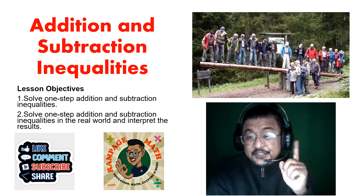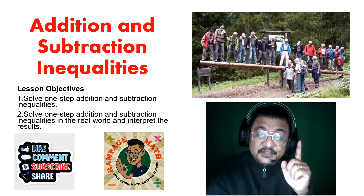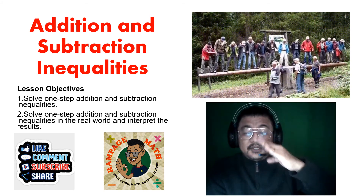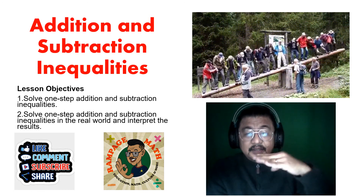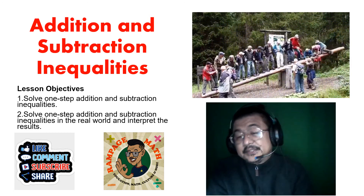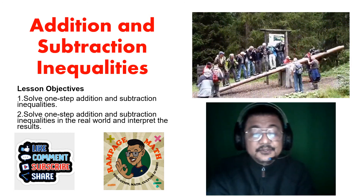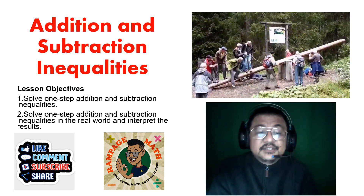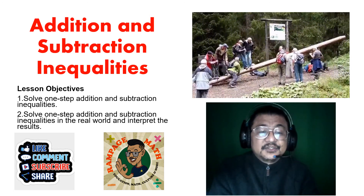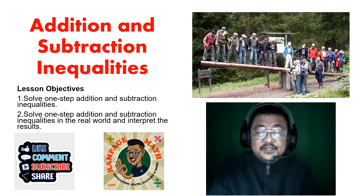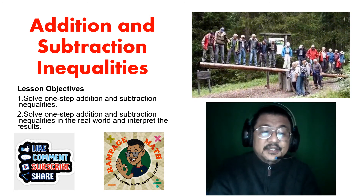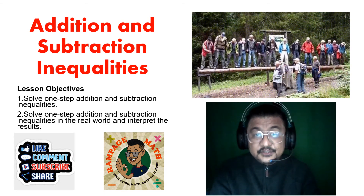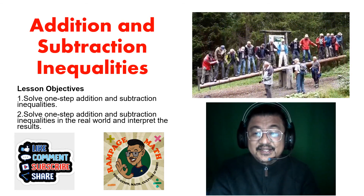All right, I know you're checking this out. It's funny, right? Because the seesaw is unequal and you have to maintain that. How do you do that? You still need to apply your addition and subtraction rules. We will solve one step inequalities and how it applies in a real world situation. Ready?